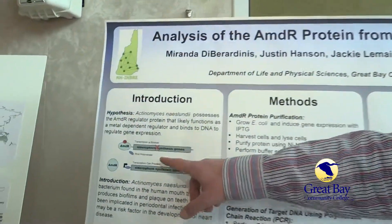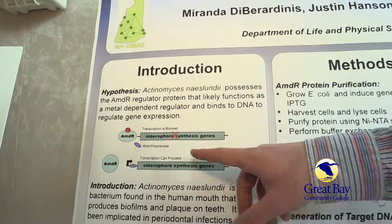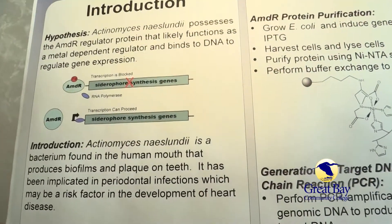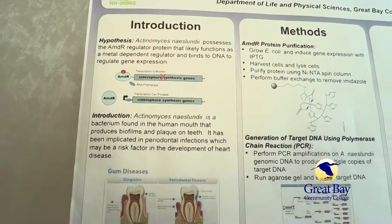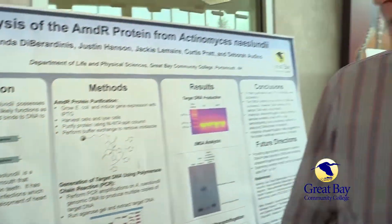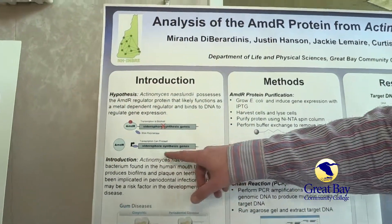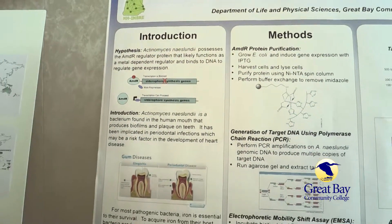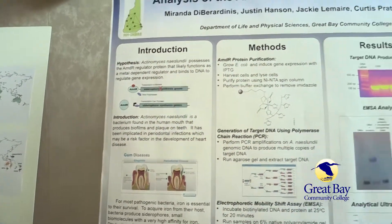AMDR is our iron-binding protein. As you can see here, it controls siderophore synthesis genes. In the presence of iron, AMDR blocks siderophore synthesis genes because it doesn't need iron. In the absence of iron, AMDR allows siderophore synthesis. The siderophores are iron-gathering structures that go out and bring back iron to the cell for survival.